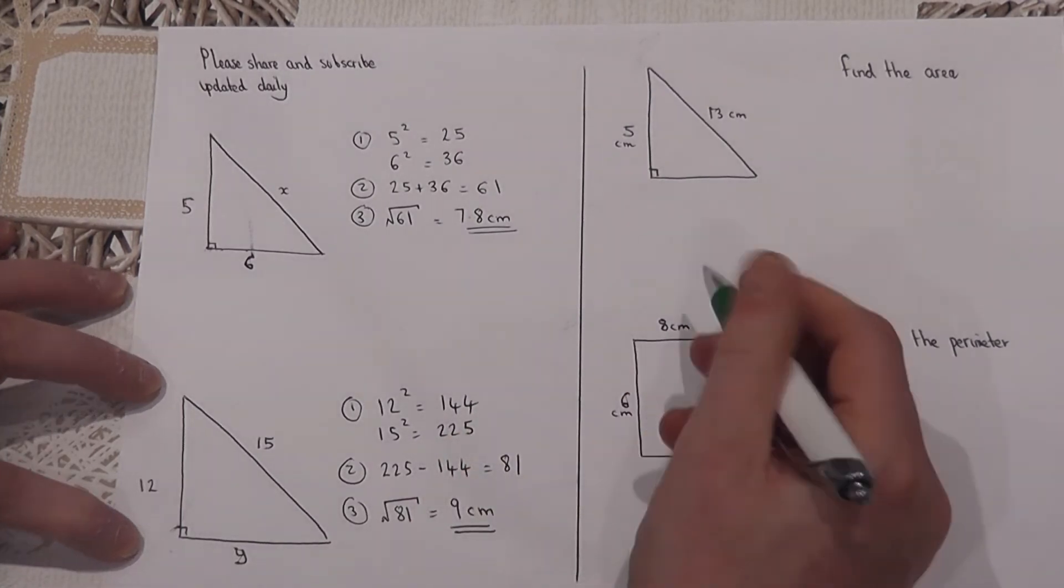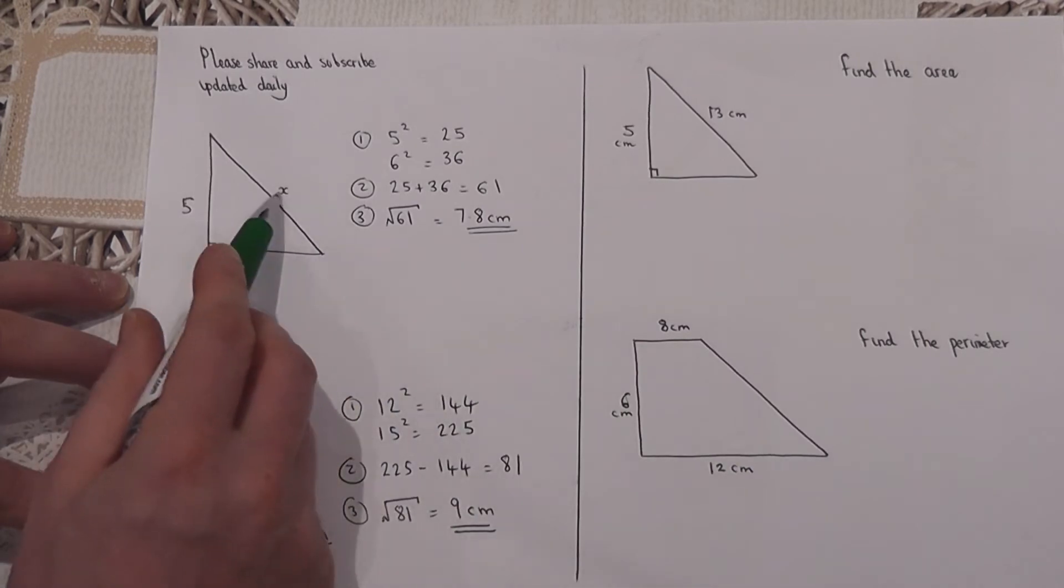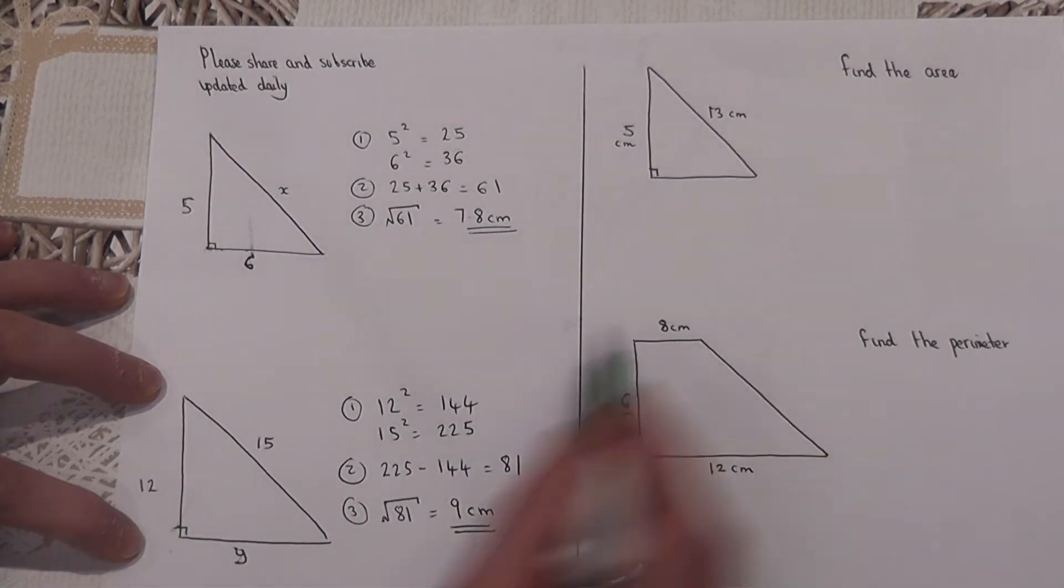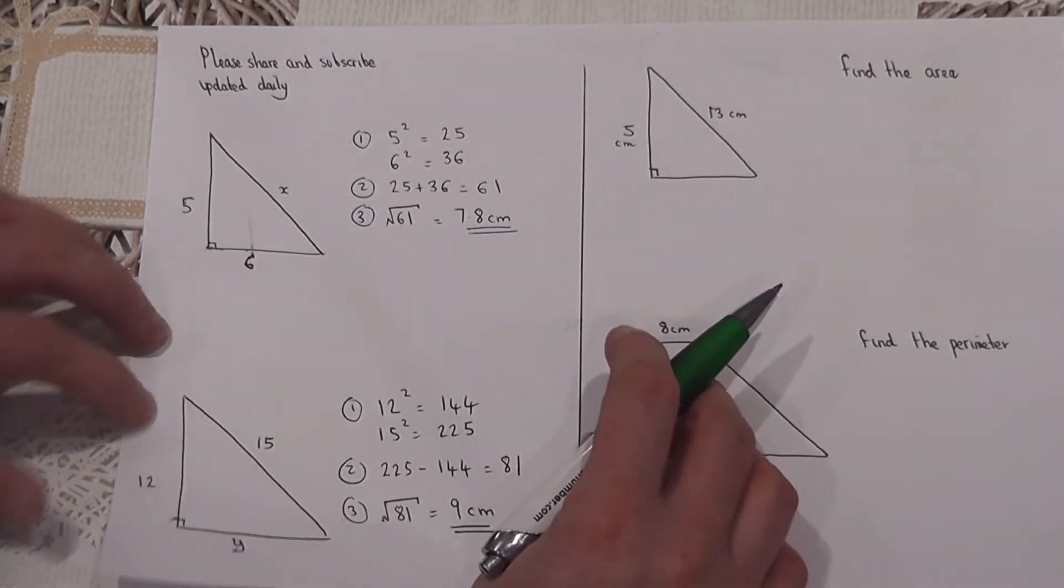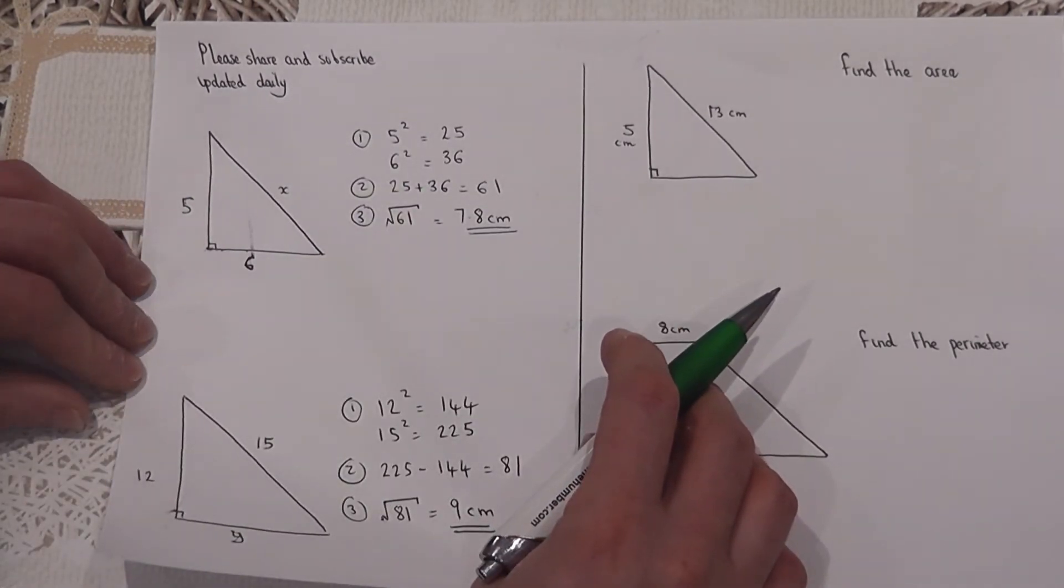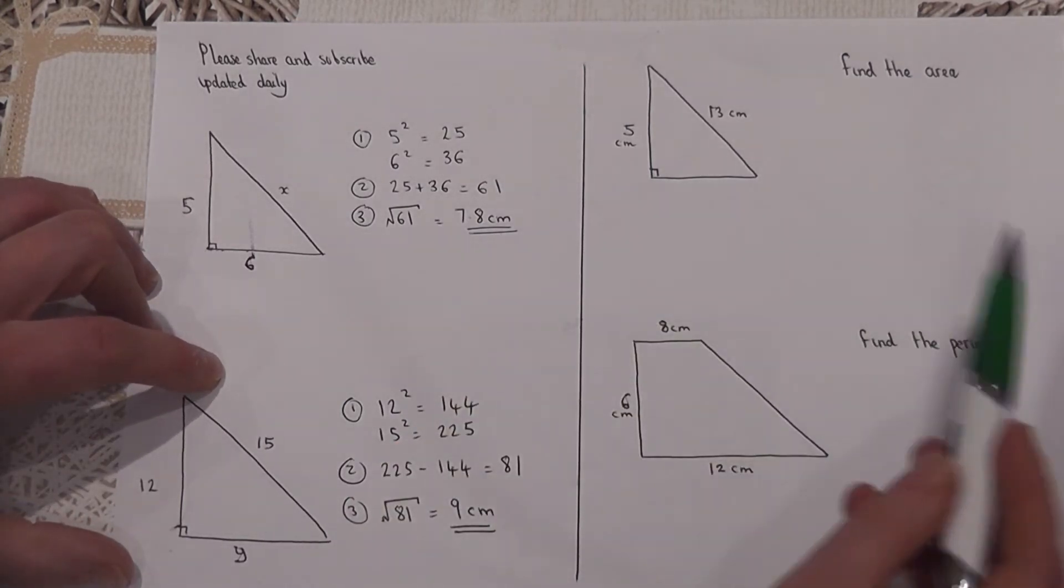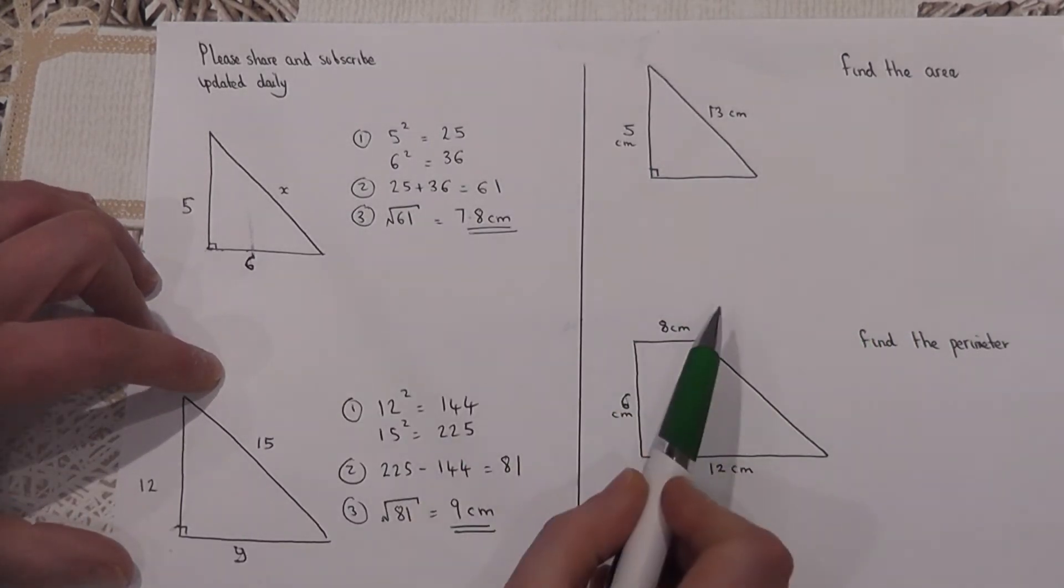Two key examples: to find the hypotenuse we add. If we know the hypotenuse and need to find either of the other two sides, we do a subtraction, having of course squared the sides to begin with. The final step is to always then find the square root.